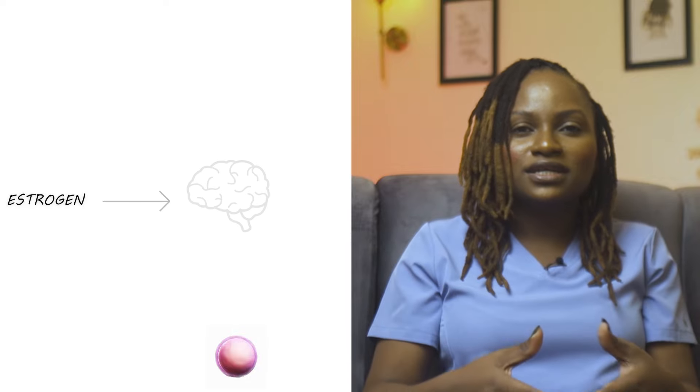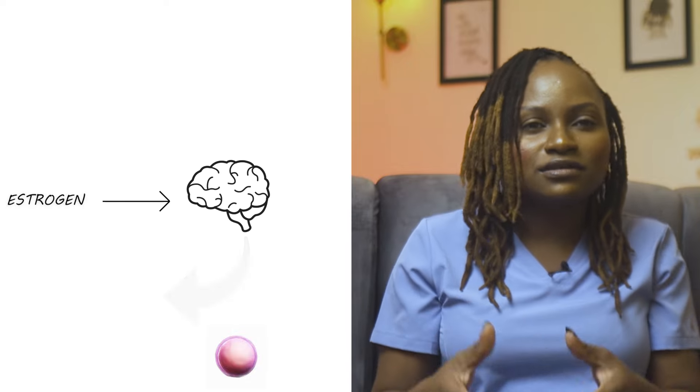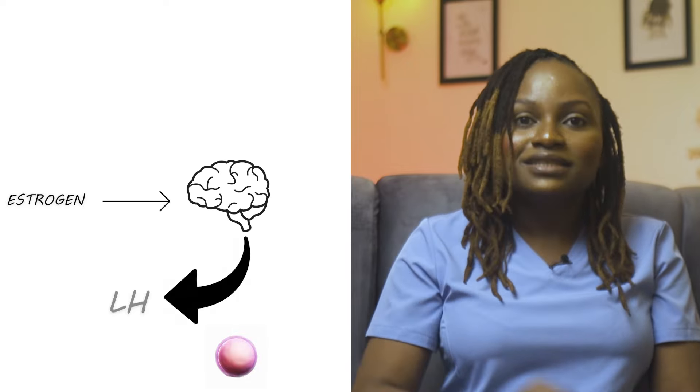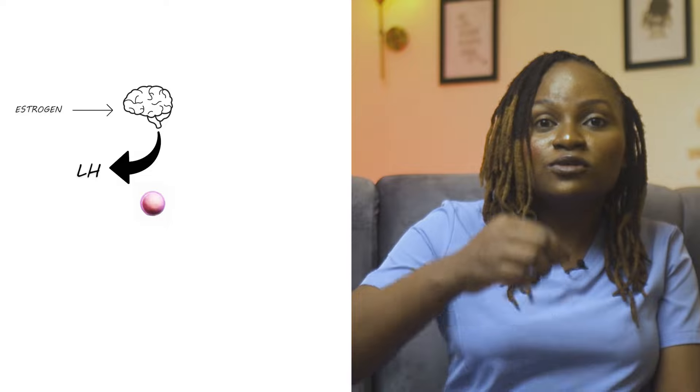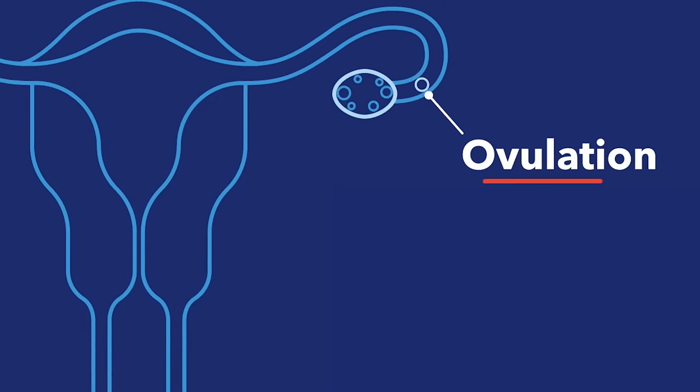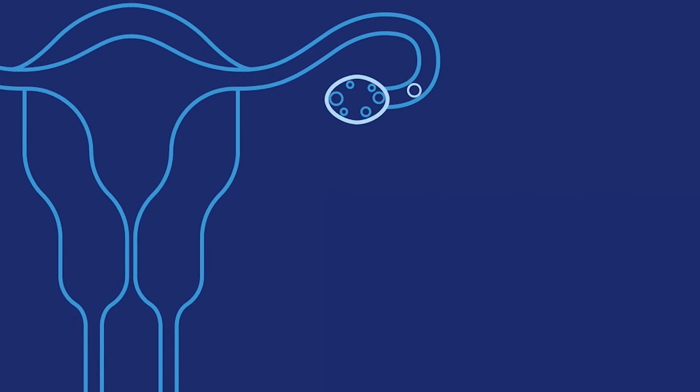At this stage, estrogen is released. When the egg is mature, this hormone called estrogen will then tell the brain to release another hormone called LH. This LH will now cause the cyst — that is the leading follicle — to rupture, to burst and release an egg into the fallopian tube. The release of this egg from the cyst is called ovulation.